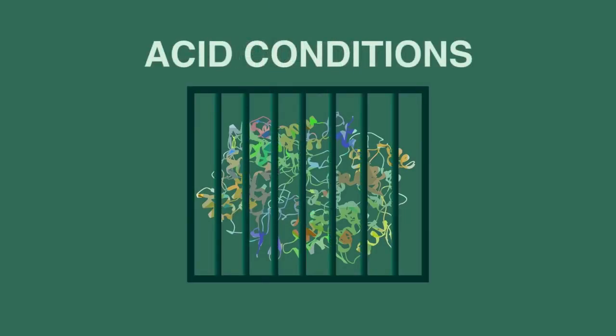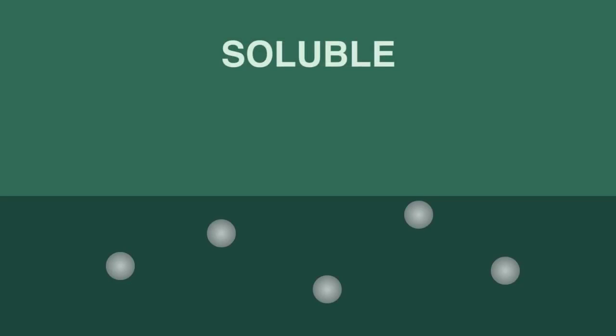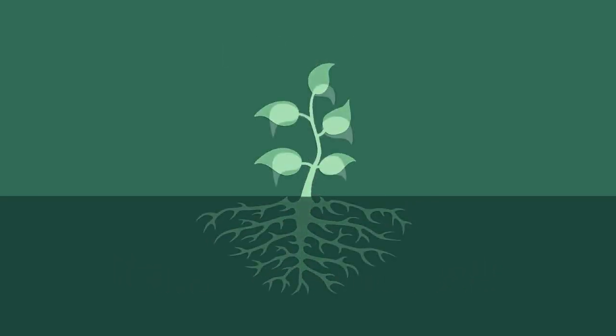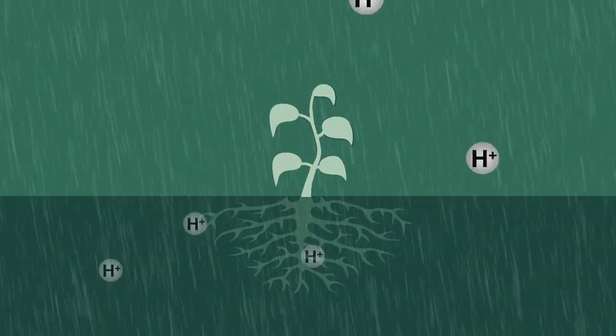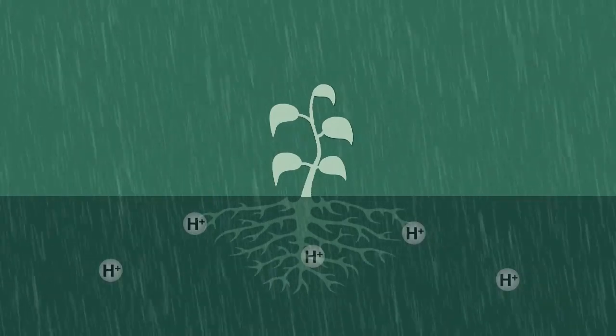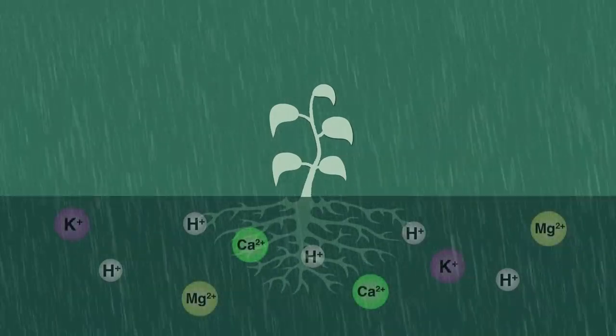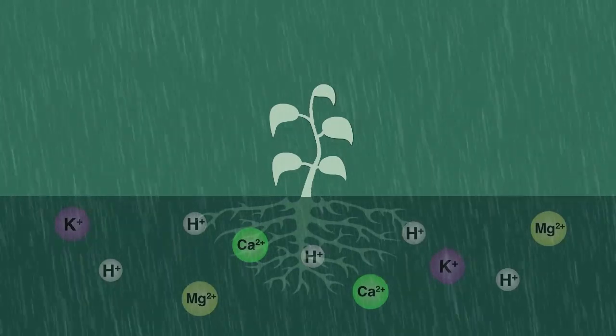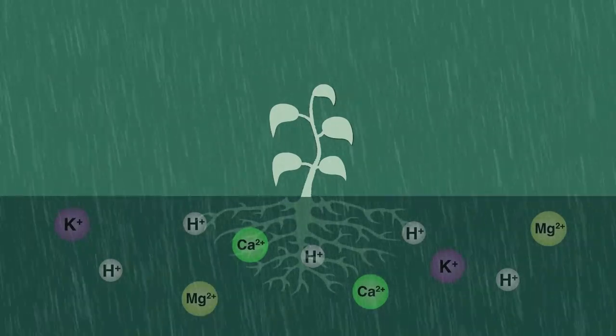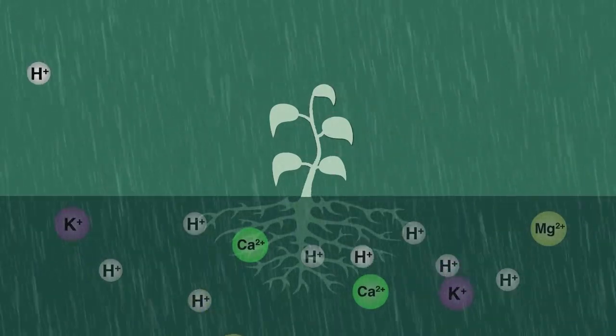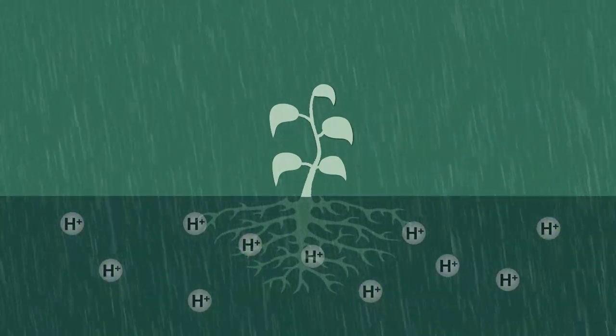The other main problem is in the soil. Whilst naturally occurring toxic metals such as aluminium are insoluble and therefore fairly harmless in neutral soil, they become soluble in acidic soil. They then get taken up by living things and take the place of essential metals such as zinc and iron. Additionally, the hydrogen ions in the acid rain will replace essential metal ions such as potassium, magnesium and calcium, which are normally held in the clay soil, causing these essential metals to be washed deep into the subsoil away from the roots of plants.